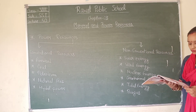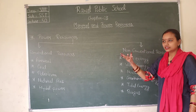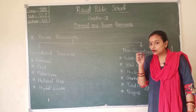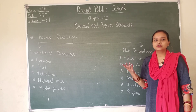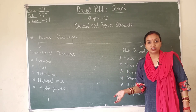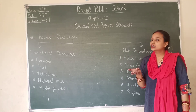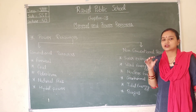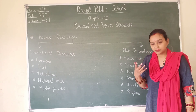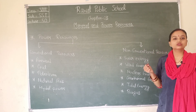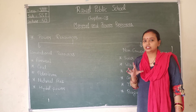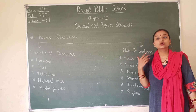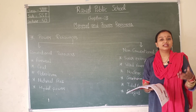Solar energy trapped from the sun can be used in solar cells to produce electricity. The energy of the sun can be used across the entire world. Where people have installed solar panels, even during grid failures they have power. We have stored solar energy in solar panels and can convert it into electricity. Solar energy can be used in solar cookers, household lighting, and small industries. Solar energy is free of cost.